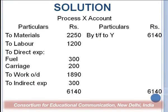How do you make the process account? In process X, all the costs incurred — material cost, labour cost, direct expenses such as fuel and carriage, works overhead of 1890, and the indirect expenses apportioned in proportion of direct wages — are debited. The total comes to 6140, which is transferred to process Y. The credit side shows: by transfer to process Y, 6000.